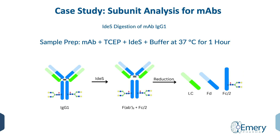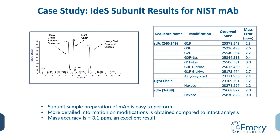Subunit analyses of MABs can characterize more detailed modifications than are accessible in the simple intact LC-MS experiment, but with a minimum of sample preparation. In a one-hour digest, the MAB is treated with IdeS enzyme and reduced with TCEP, producing three subunits, each with molecular masses of approximately 24 kilodaltons. The results on our case study of the NISMAB are presented here. In addition to the modifications characterized in the intact study, glycation, lysine modifications, and aglycosylation are observed. Again, the mass accuracy in our experiment was excellent at plus or minus 3.1 ppm.